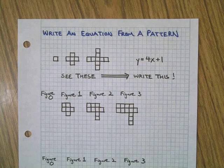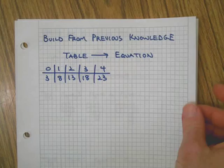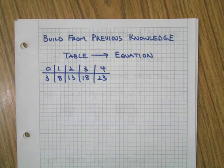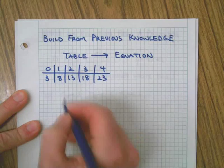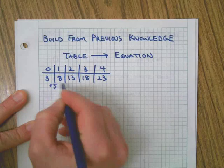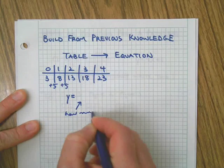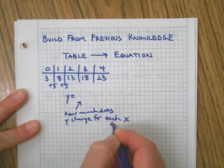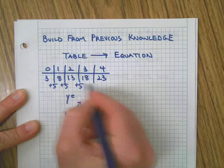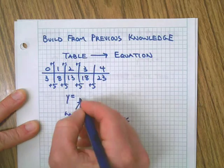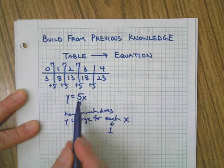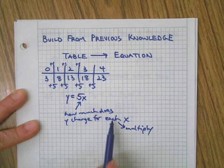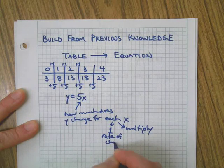First of all we need to make a connection here to what you've already learned. If you're going to write an equation from a table you just start by writing y equals. And then we're looking for how much does y change for each x. Each means one right. So for each x that goes by we have five so we put that answer there. Then we put x to show that it's five for each x because each also means multiply. So that means the rate of change, the movement, gets multiplied by x.